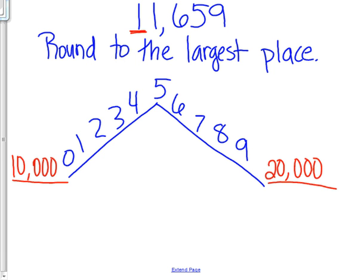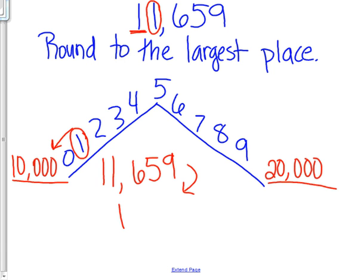I'm going to come back up to my number. I'm going to circle the number to the right of my underline. Then I'm going to come back down here and circle the same number. I'm going to roll down my hill. So 11,659 rounds to 10,000.